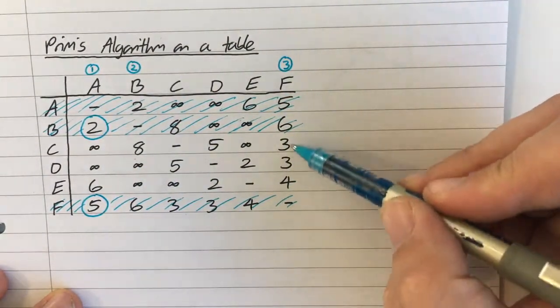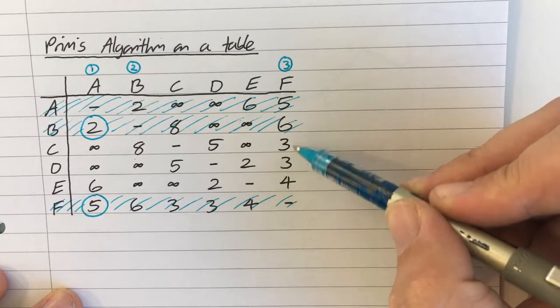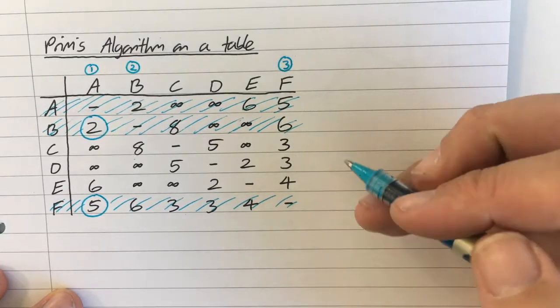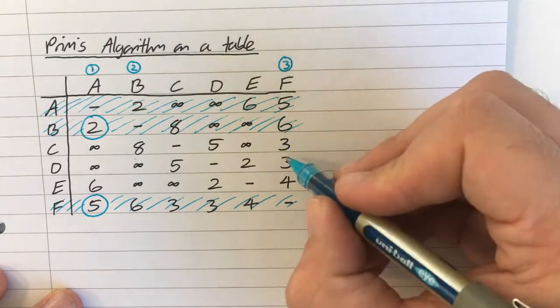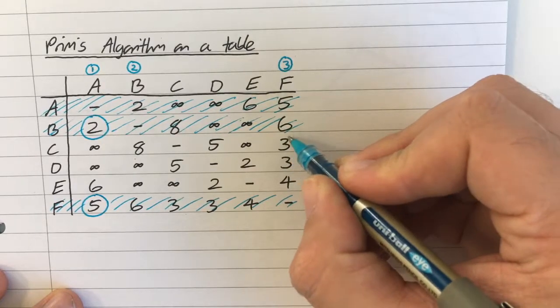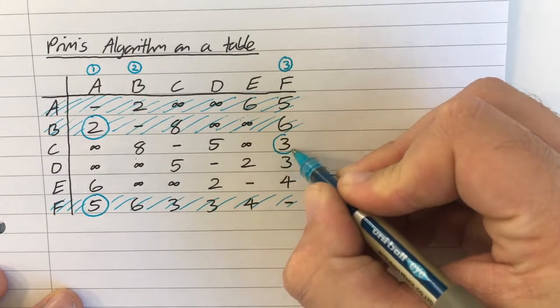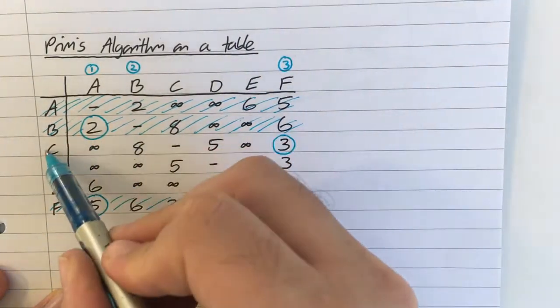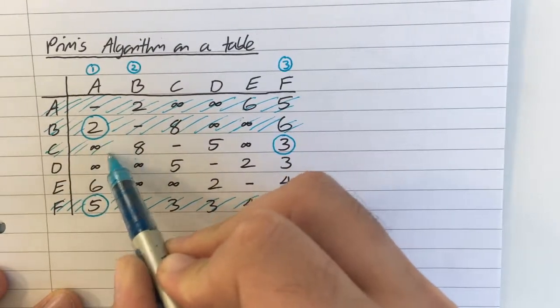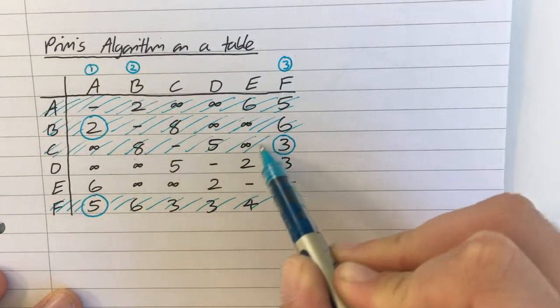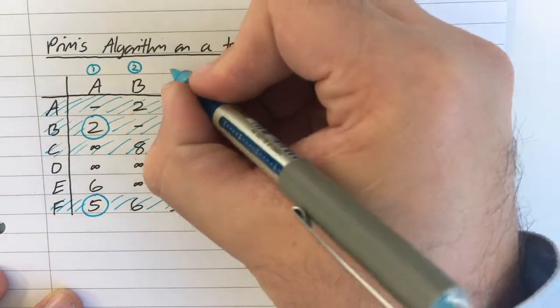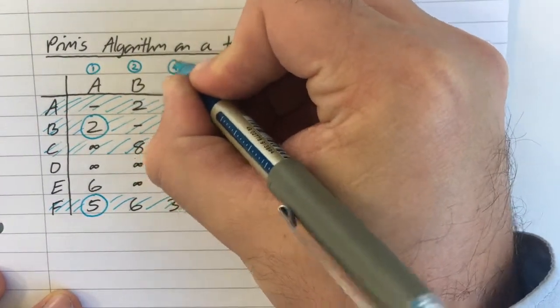So, I've actually got an arbitrary choice now of 3, and it does not matter which you choose. Okay, you can choose either. I'm going to go to C. Okay, so I'm choosing that one. Cross off that row, so I don't go back to it. And put a 4 above that one to indicate that is part of my tree.